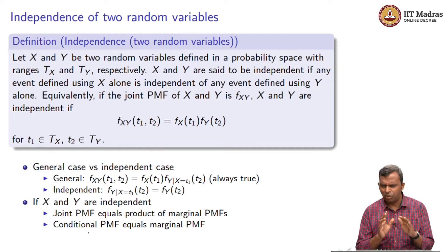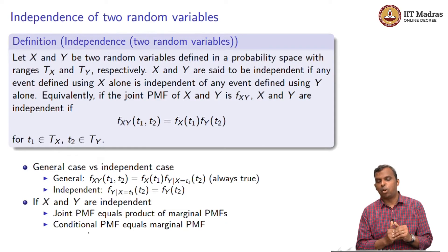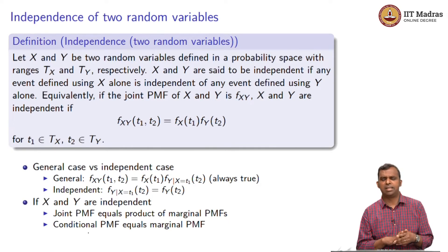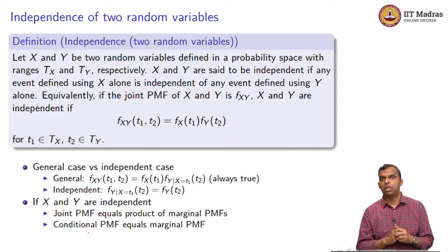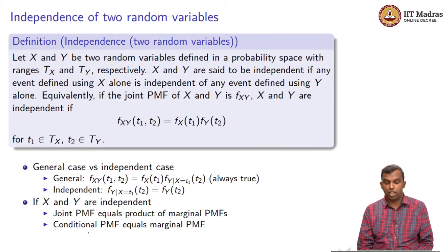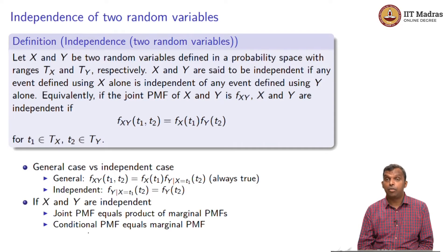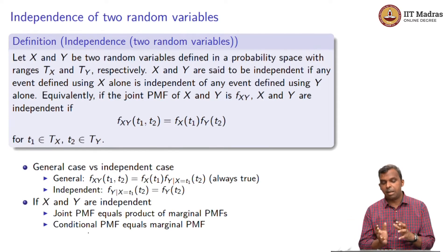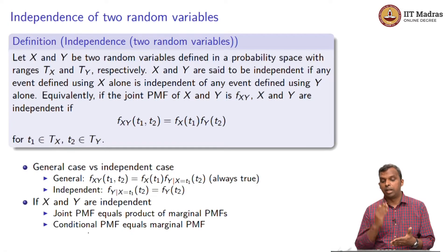That is the most important definition. But there is a very equivalent formulation in terms of the PMF, which is powerful and easy to use. X and Y are independent if and only if the joint PMF equals the product of the marginals: F_{X,Y}(t1, t2) = F_X(t1) · F_Y(t2) for all t1 and t2. No conditional appears here, just the marginals.